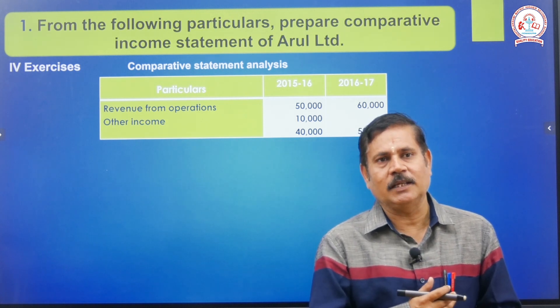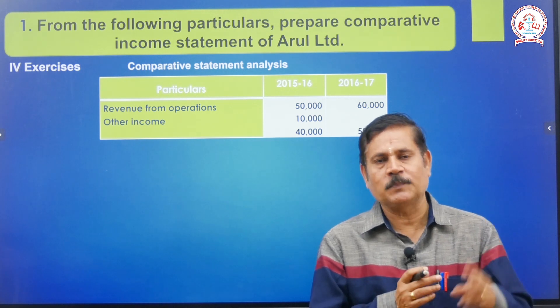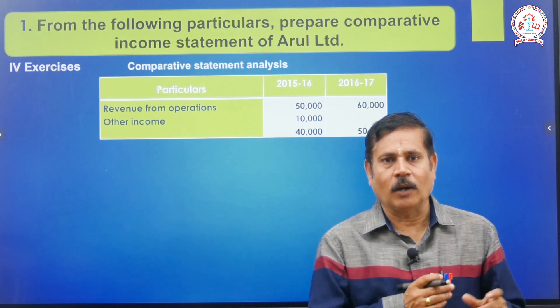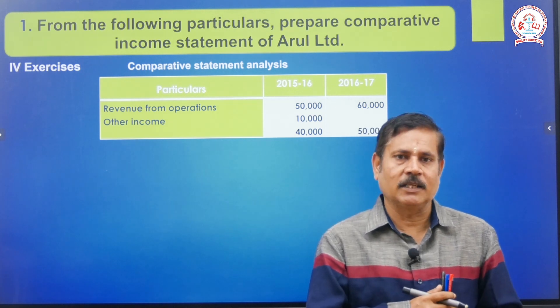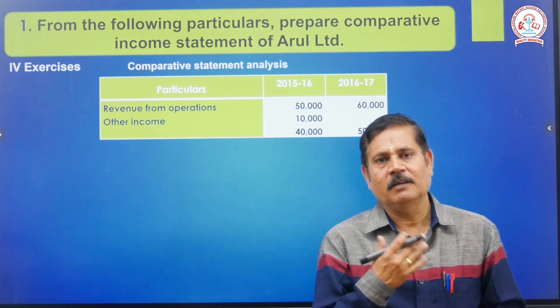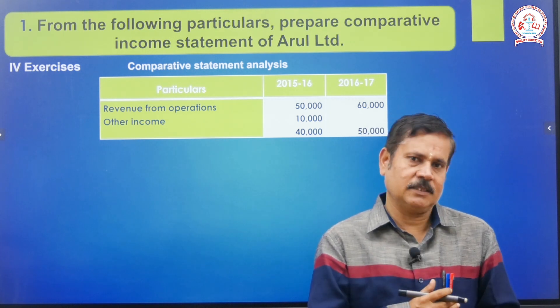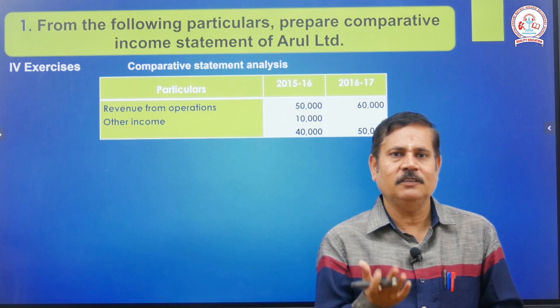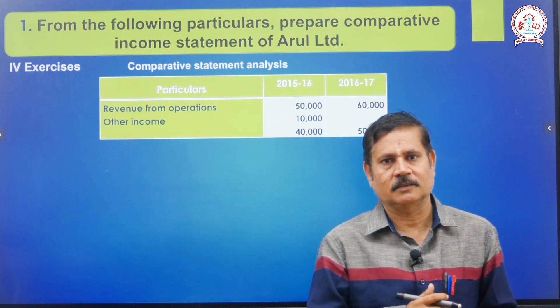The statement has two types. One is the income statement; another one is the balance sheet statement. The income statement finds out the performance of the business, and the balance sheet finds out the financial position of the business.